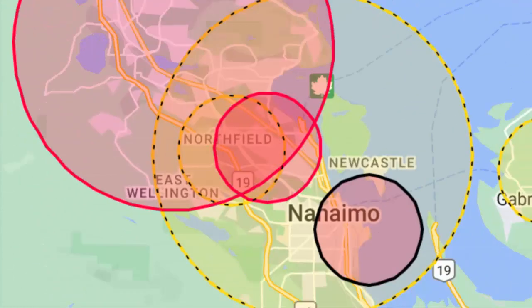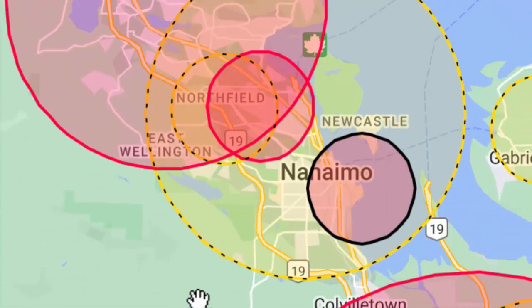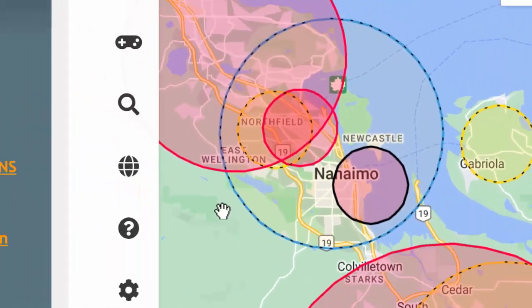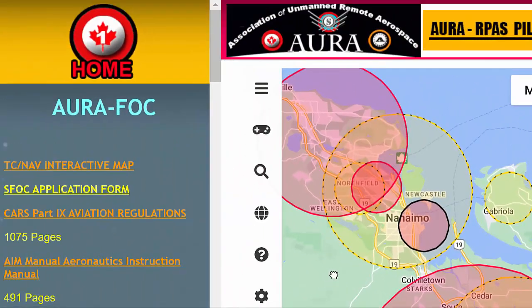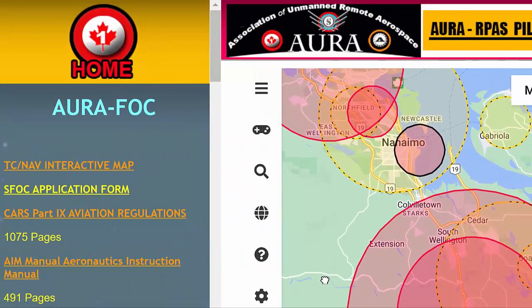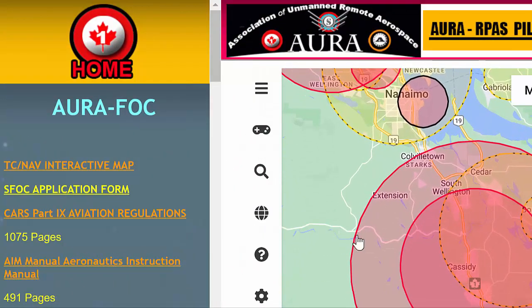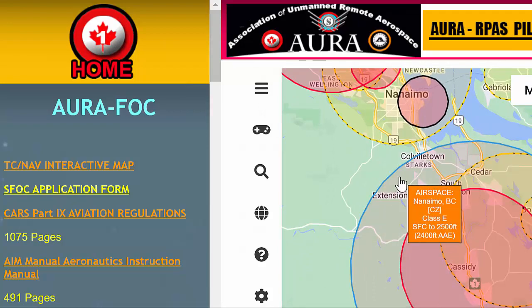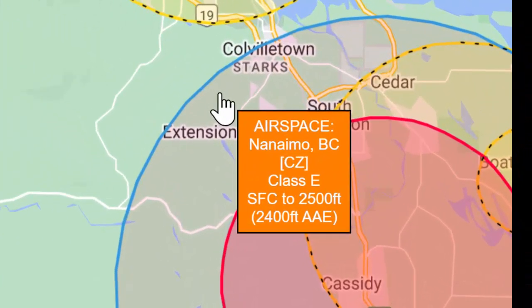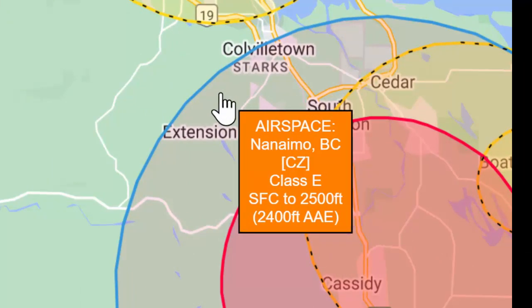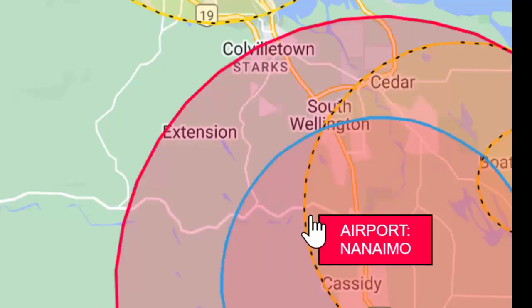Operations when other aircraft are present are strongly discouraged. So what's the result of that? That means yes, you can fly in the yellow areas, but exercise caution. As you can see, you just roll over and you can see the airport that's involved. That would be the airport that you would have to contact. Some operations require an SFOC for these areas.